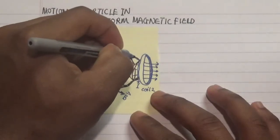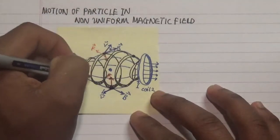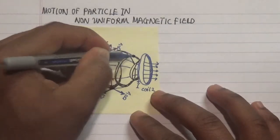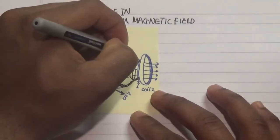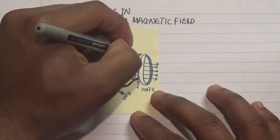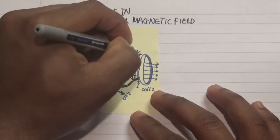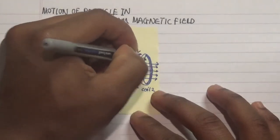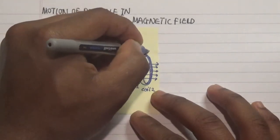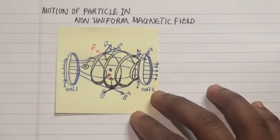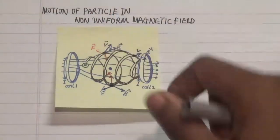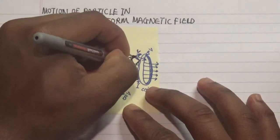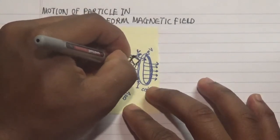Let's pick a third point. As the particle moves in this direction and approaches this region, the velocity is going this way while the magnetic field is pointing in this direction. Applying the right-hand rule, we find that our force is pointing in this direction here.